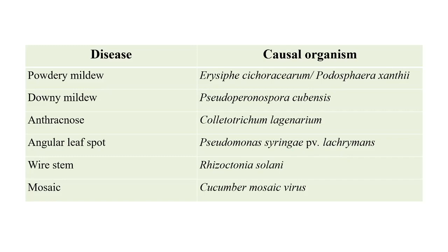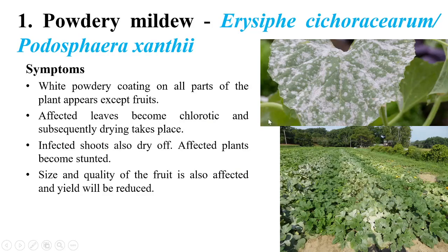The first disease is powdery mildew, caused by Erysiphe cichoracearum, with the new name Podosphaera xanthi. The name itself indicates a powdery appearance. On the right side we can see white powdery growth on the surface of the leaf. In the field, we can clearly observe severe white powdery coating on the upper surface of the leaf.